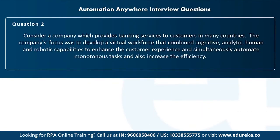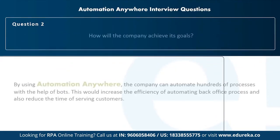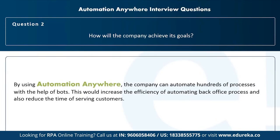Scenario two: consider a company providing banking services across many countries that wants to develop a virtual workforce combining cognitive, analytic, human, and robotic capabilities to enhance customer experience and automate monitoring tasks while increasing efficiency. How would the company achieve its goals? By using Automation Anywhere — the company can automate hundreds of processes with bots, increasing the efficiency of back-office processes and reducing the time for serving customers.